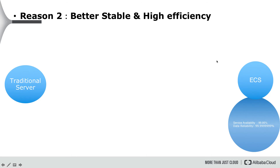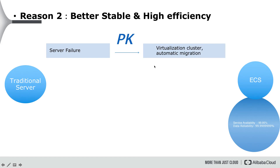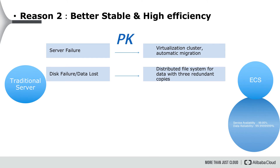Another reason to choose ECS is better stability and high efficiency. Let's look at some failure cases and how ECS handles them differently from a traditional server. If a server failure occurs, since ECS uses a virtualized server cluster, it is able to migrate to another available server automatically. For disk failure, in a traditional server case, if you don't set up disk backup, it may cause data loss and not be recoverable. ECS uses a distributed file system with three redundant copies for all data, so you don't need to consider data backup yourself.